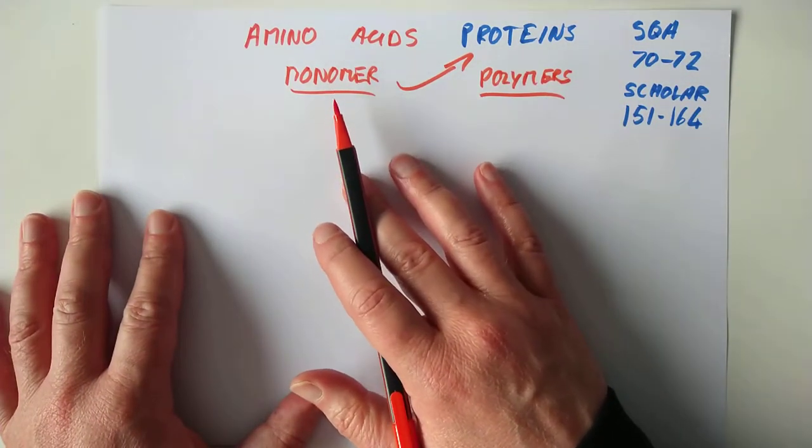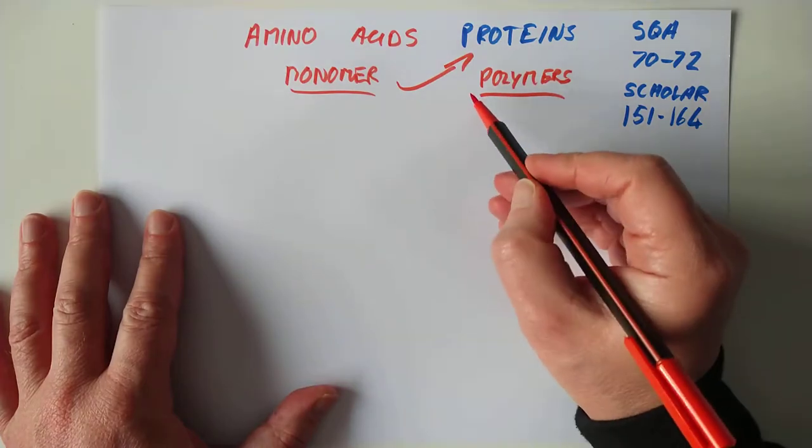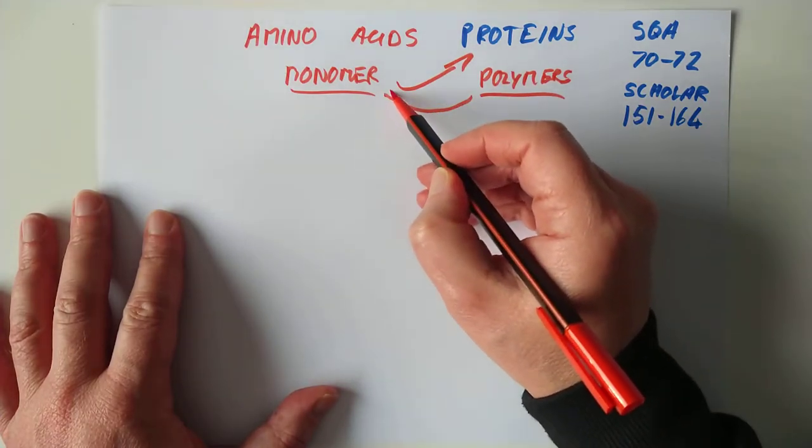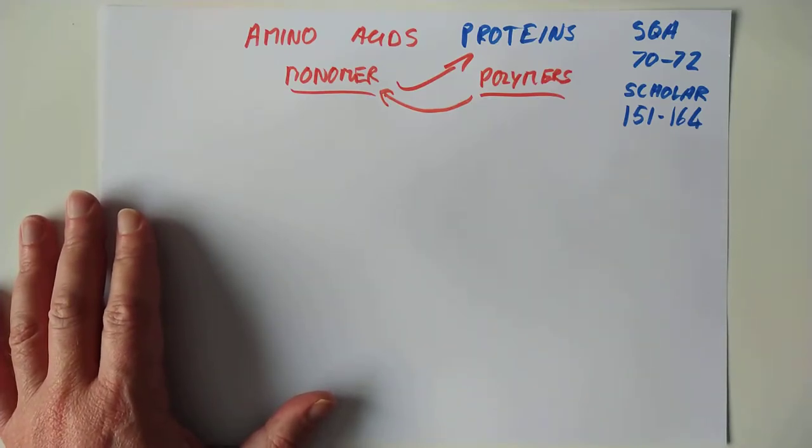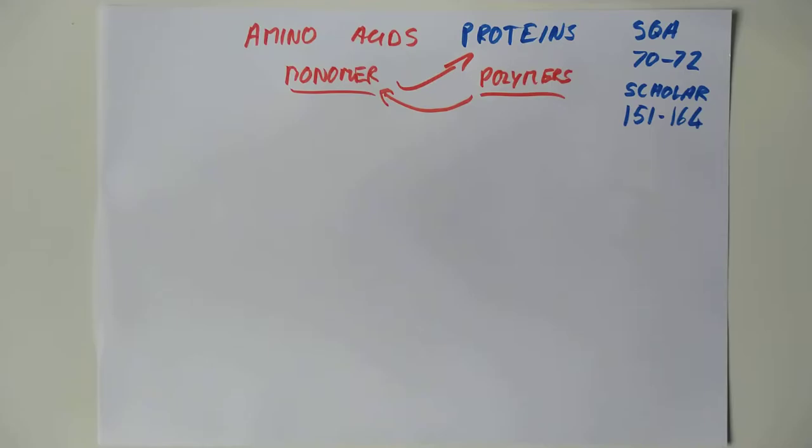We're going to have a look at the structure of amino acids and how they join to make polymers and also how you can un-join them. Let's have a look at that. So, typical amino acid structure. Let me draw one for you.